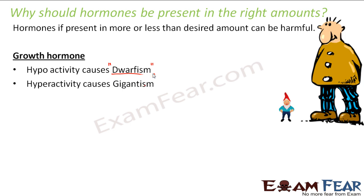On the other hand, if there is hyperactivity — too much secretion of growth hormone — this can cause gigantism. That means the person might look like a giant. You can see here: just compare the two persons, one is too big and the other one is too small. So if growth hormone is in the right amount, the physical growth of the person will also happen in the right amount.